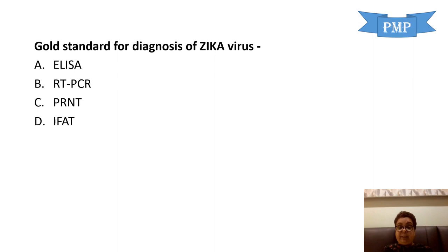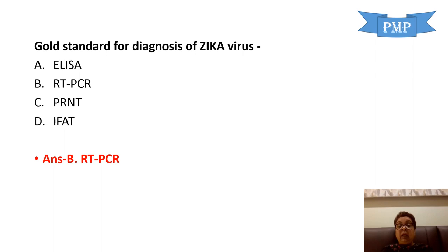Gold standard for diagnosis of Zika virus — the answer is RT-PCR. If asked specifically for diagnosis in the first week, the answer remains RT-PCR. If the question specifies the second week, viremia levels become lower, but the answer here remains RT-PCR. Reservoir for Zika is monkeys. The vector is Aedes species like Aedes aegypti and Aedes albopictus. Apart from mosquito bites, it can also be transmitted transplacentally, sexually, through blood transfusion or blood products, and organ transplantation.